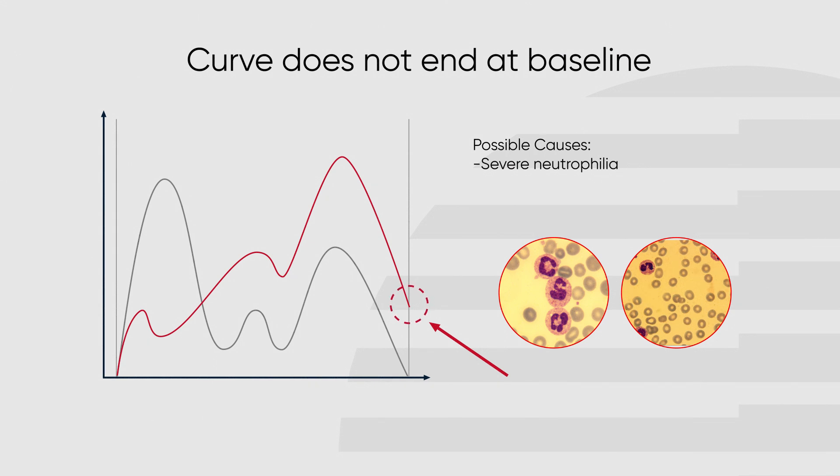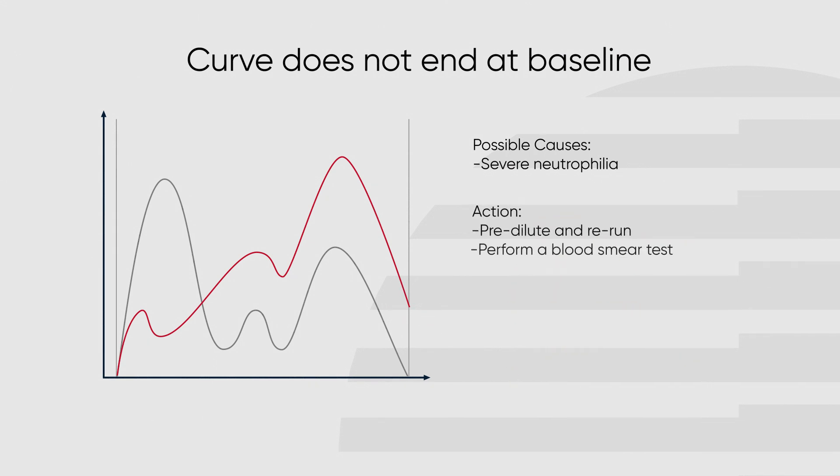If this occurs, pre-dilute the sample and rerun, then proceed to check smear.